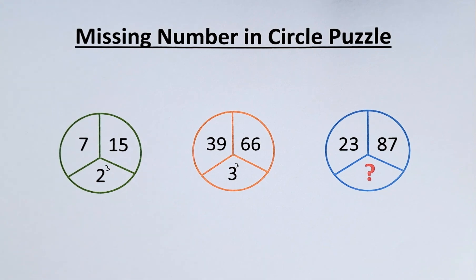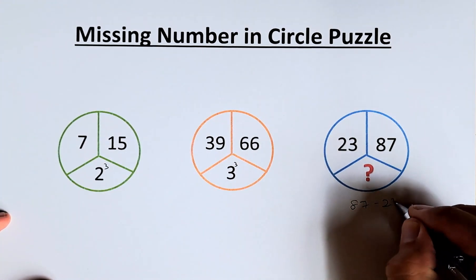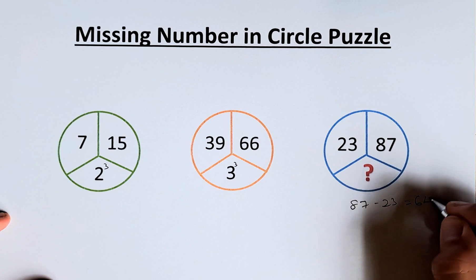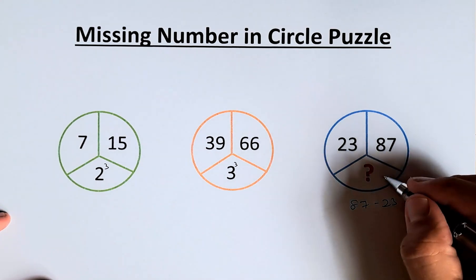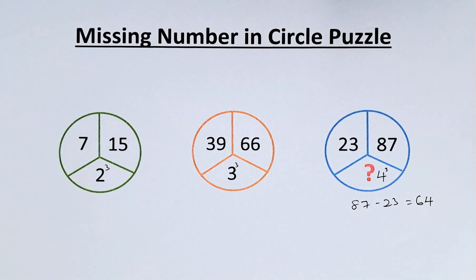And last but not least, if you take 87 minus 23, the answer is 64. 64 is 4 to the power of 3. So the question mark is 4.